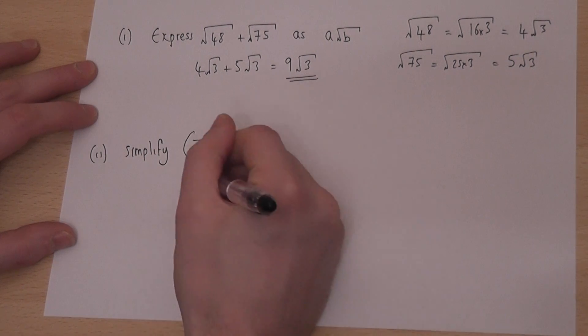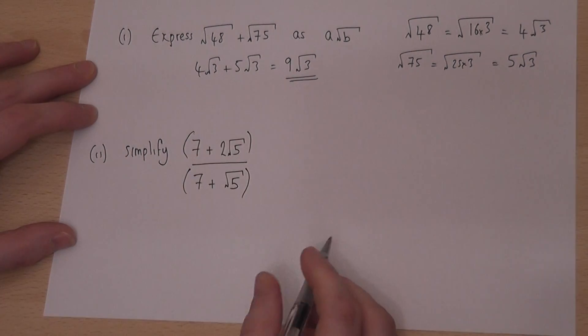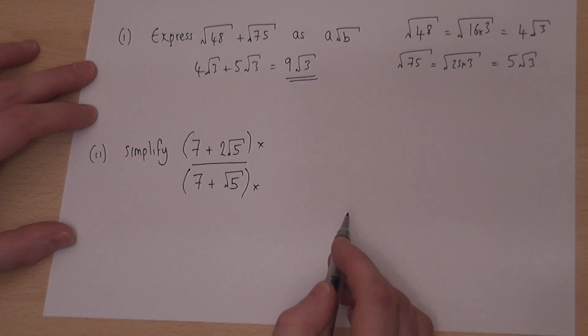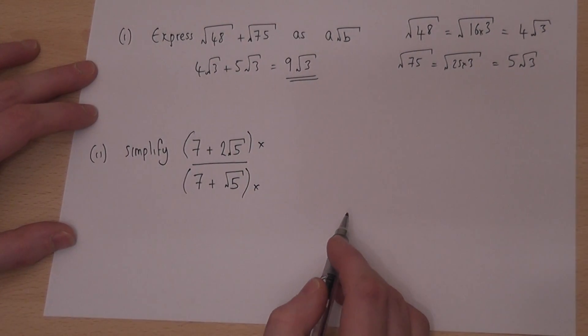And to do this we use a standard technique. I'll put some brackets on the top and the bottom, and we're times the top and bottom by the same number. That keeps the fraction the same but will hopefully make it simpler.